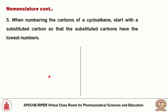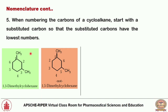When numbering the carbons of a cycloalkane, start with the substituted carbon so that substituted carbons have the lowest numbers. For example, shown in green (correct): numbering clockwise gives 1,3-dimethylcyclohexane. If you number anticlockwise, you get 1,5-dimethylcyclohexane — that is the wrong IUPAC name, shown in red.